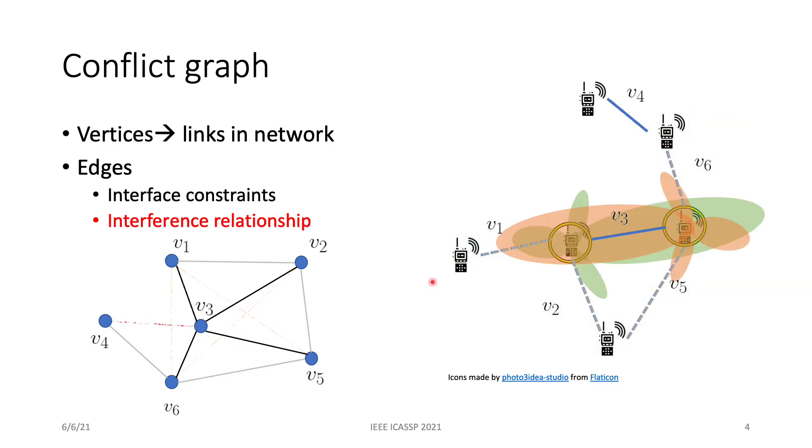Even if we reduce the radio footprint of v3, it is still connected to, for example, v1 because they share the same user and there is an interface constraint. A legitimate schedule is an independent set of vertices on the conflict graph.